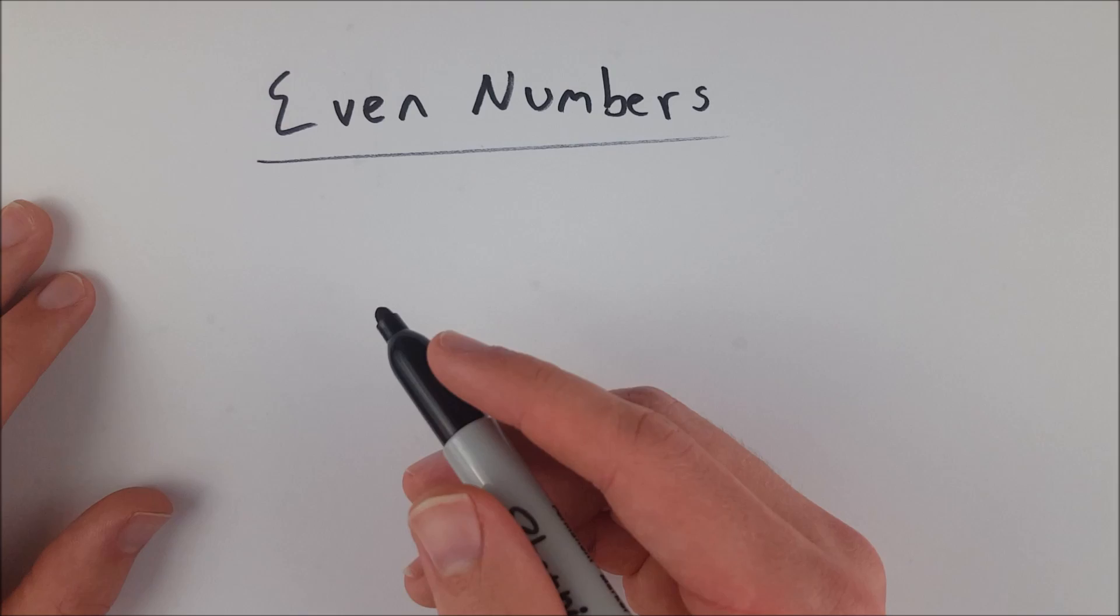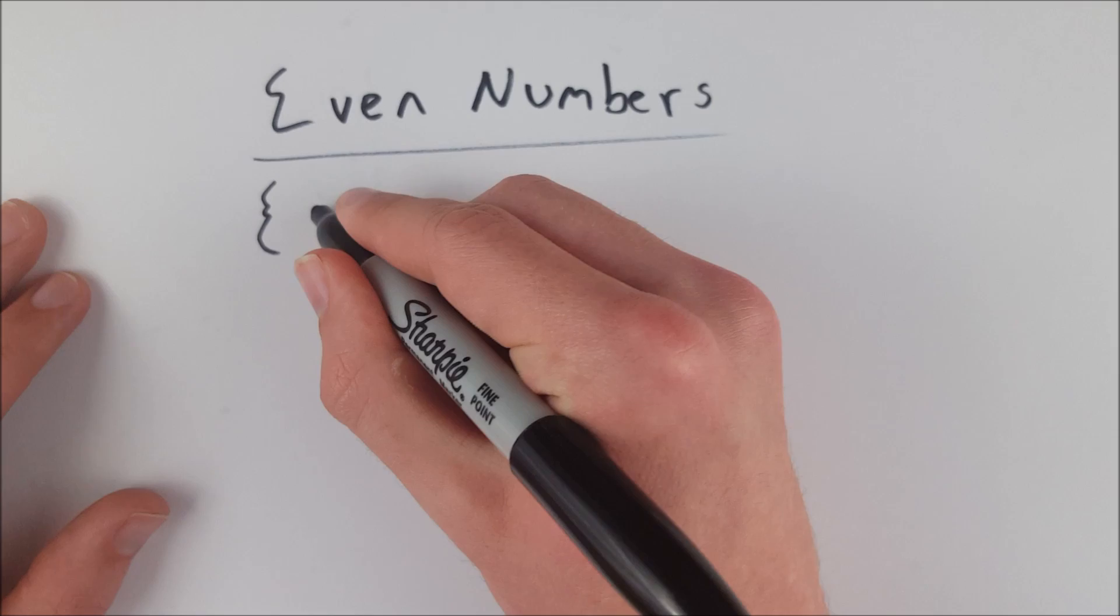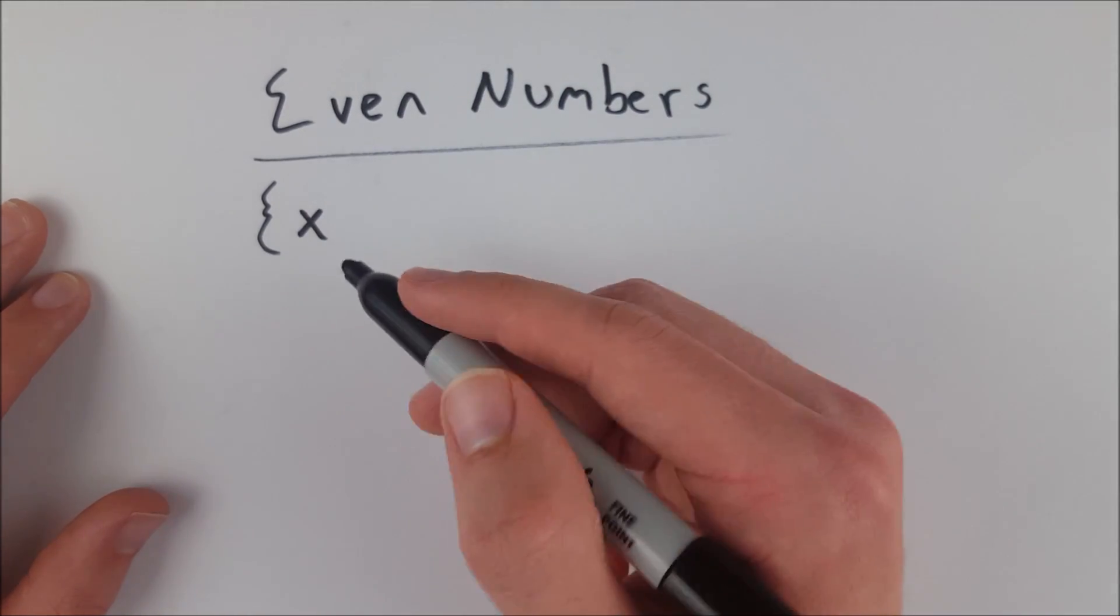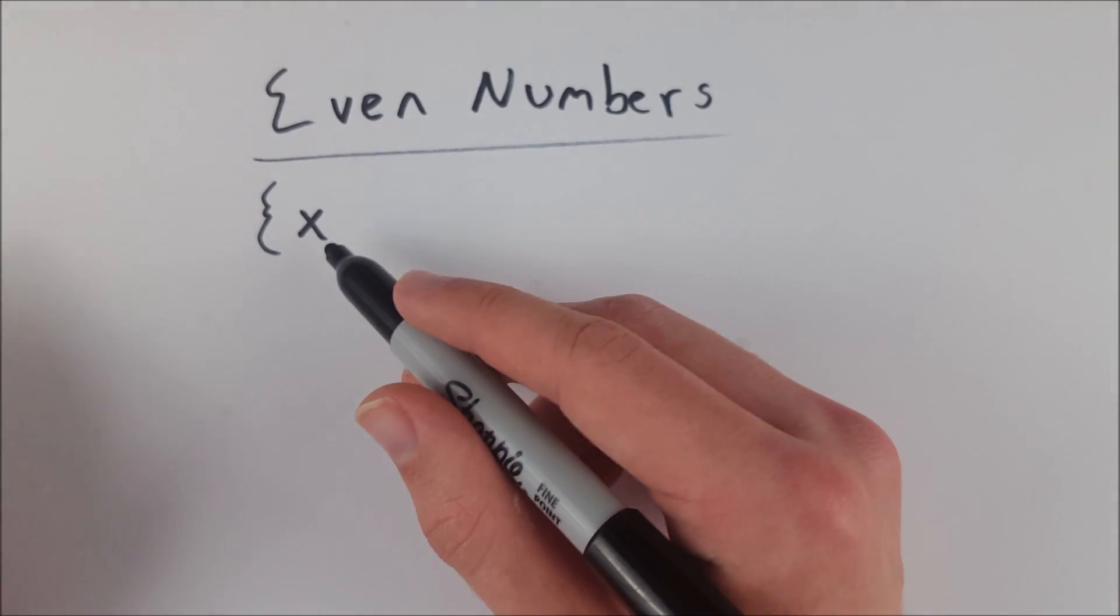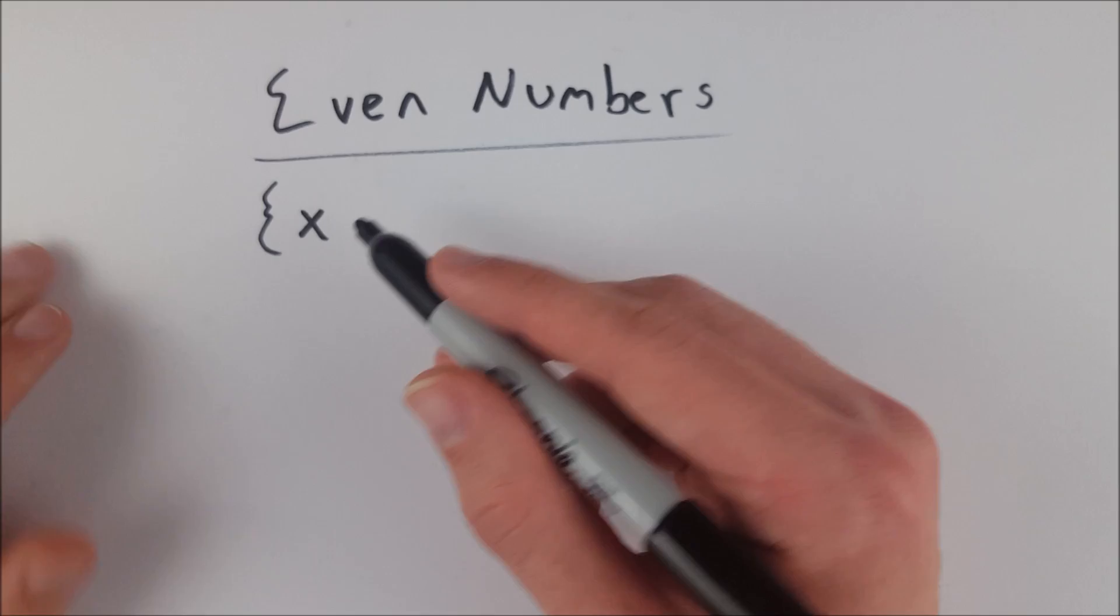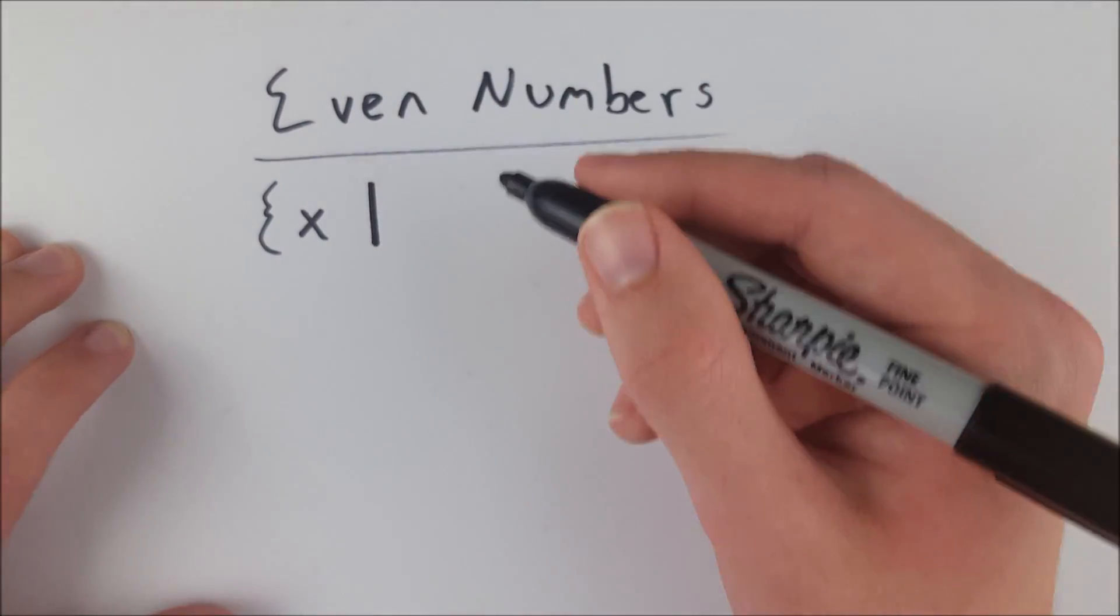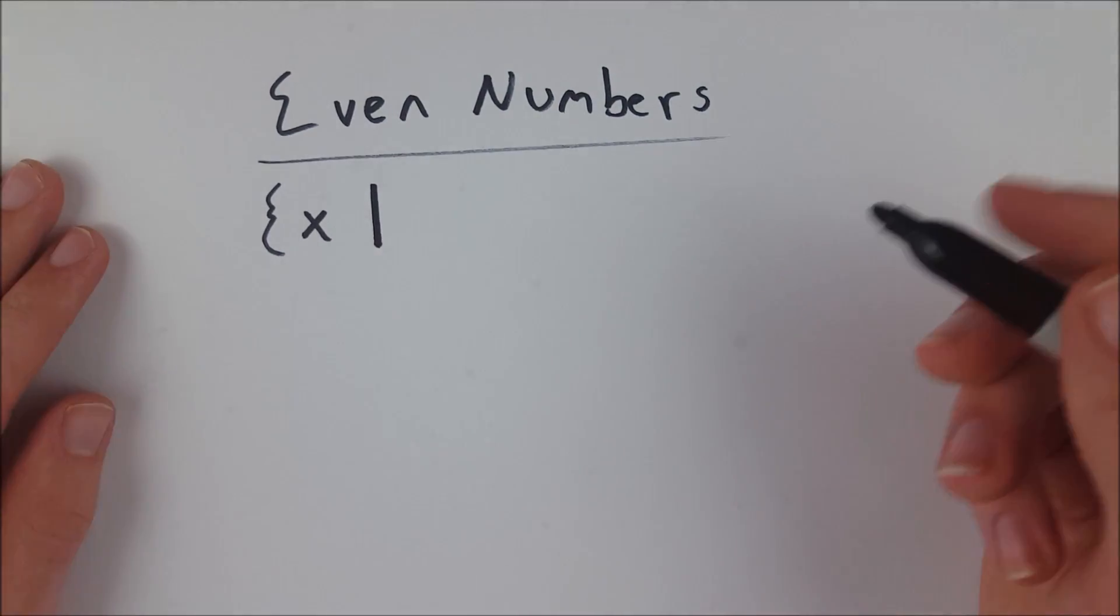So what do the even numbers look like in set builder notation? Well, we'll open up our set, and the first thing we put is an x. This is just saying all numbers x, and then we're going to place some restrictions on x. You could use any variable here that you want, we're just going to use x. And this is the big bar that separates x from all of our restrictions that we're going to set on x.